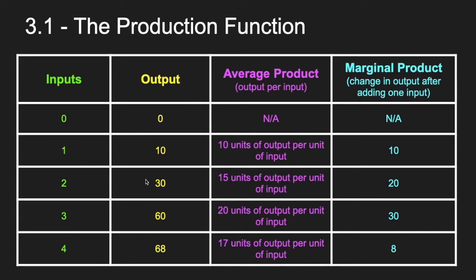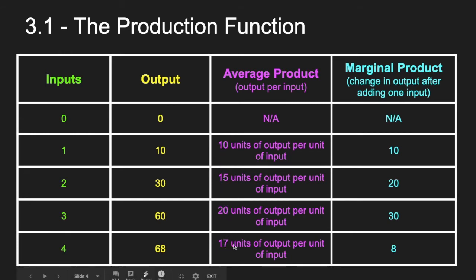Continuing: 60 over 3 is 20, and 68 over 4 is 17. What you notice is that average product goes up, up, and then down. That's an important relationship we're going to talk about.